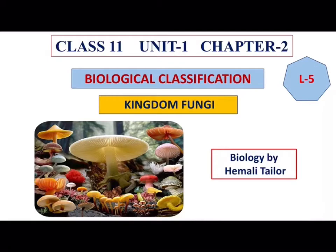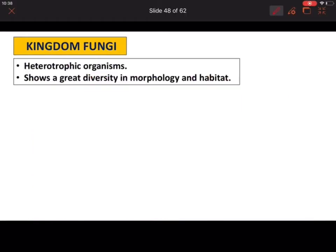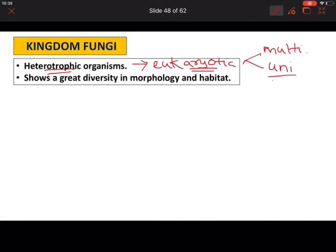Hello everyone. Today in this video of chapter number two we are going to study about Kingdom Fungi. Kingdom Fungi includes heterotrophic organisms — heterotrophic means they cannot prepare their own food. They are eukaryotic and mostly multicellular organisms. You can also find unicellular fungi but that is only one exception, and the rest of the fungi will be multicellular.